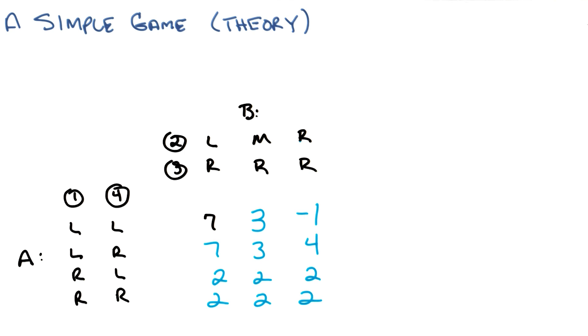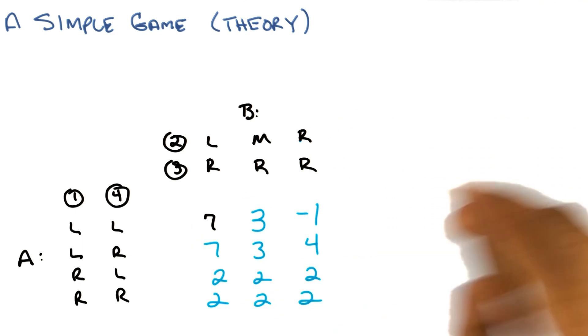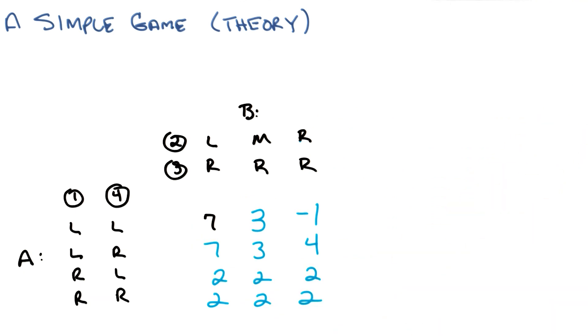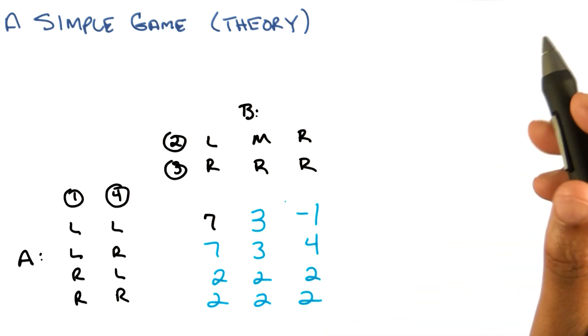No, B wants to maximize what B gets. And remember B always gets the opposite of A because it's a two player, zero sum, finite game of perfect information, deterministic or something. So, so you're saying that if we, if A chooses the first row, which is the left left strategy, then B now has a choice between three values and will choose the one that is worst for A, which would be the minus one. So that would be a terrible thing to do. Yep.